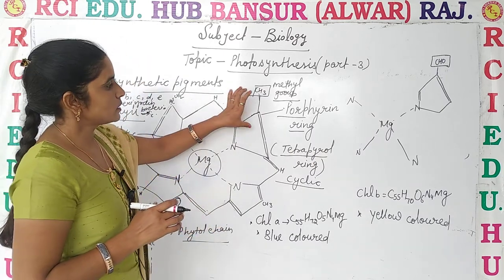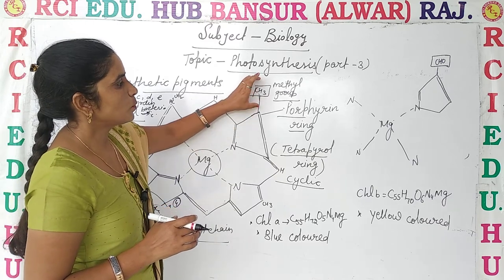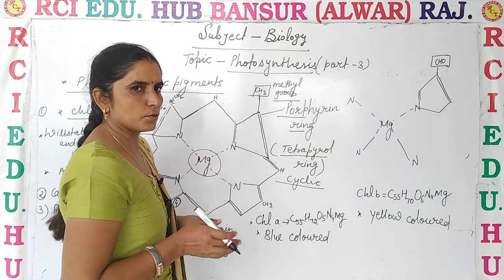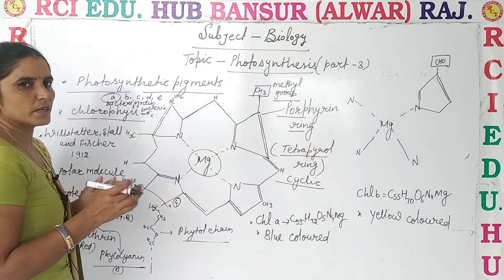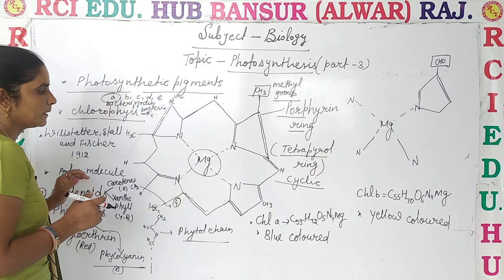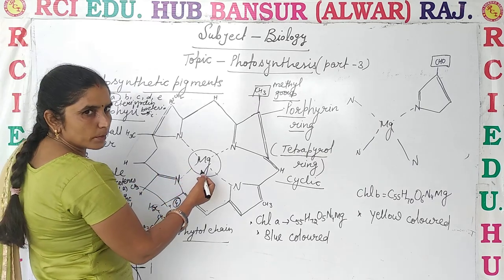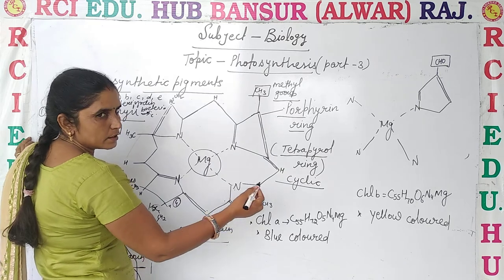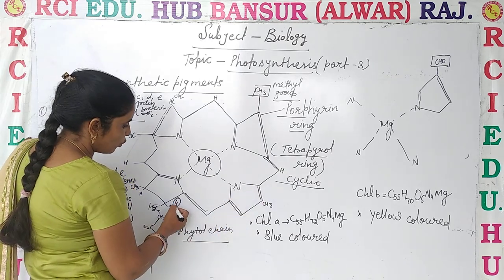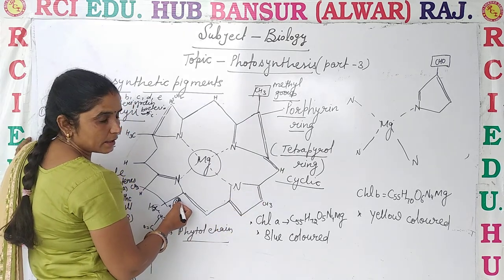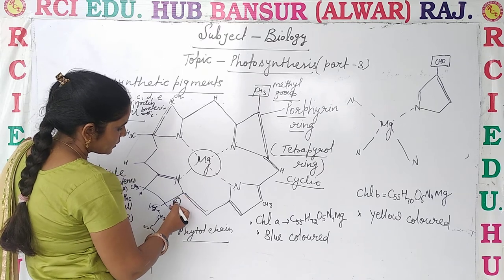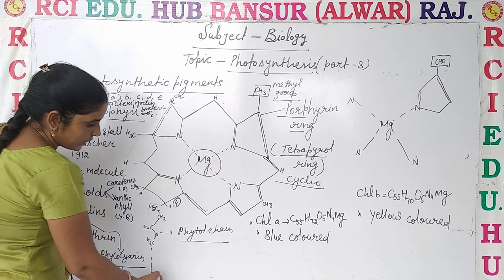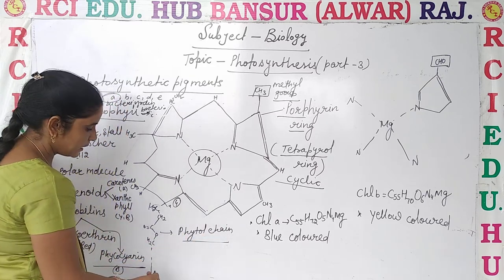In the pyrrole ring of chlorophyll A, a methyl group is connected, whereas in chlorophyll B, an aldehyde group is connected. This is the first major difference between chlorophyll A and B. At the center of both, magnesium is present. This entire structure is the cyclic tetrapyrrole ring, and on the fourth ring, a phytol chain of about 20 molecules is connected.